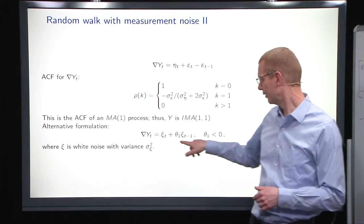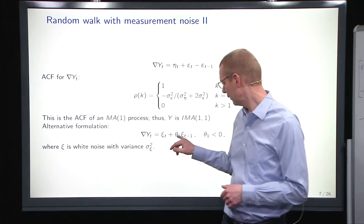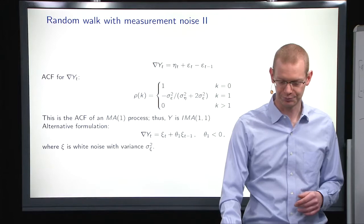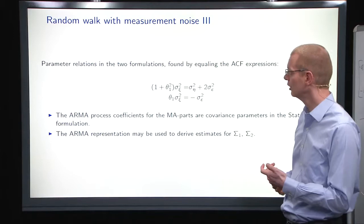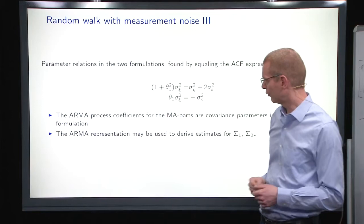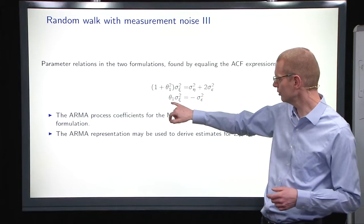So we can also write it on this form, and then if we look at the parameters in this model, we have the theta, and we have the variance of the ε there. We can do the autocorrelation function for both, or covariance function for both model structures, and we can equate what they are at the different lags.